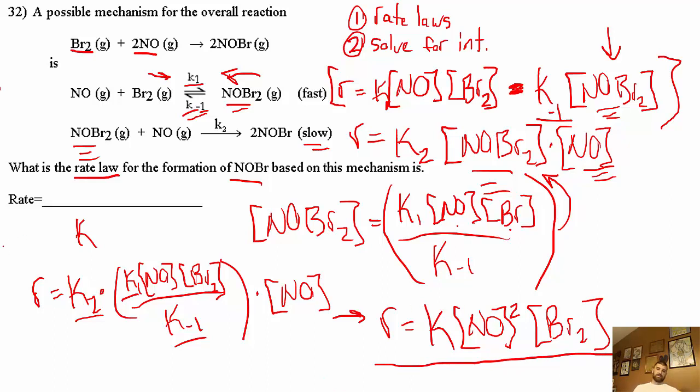NO squared and one Br2. This is our rate law. What I normally do when we have K1, K minus 1, and K2 is I usually just ignore them because I know they'll combine to become just a new K, so I usually just ignore them when I do the work.